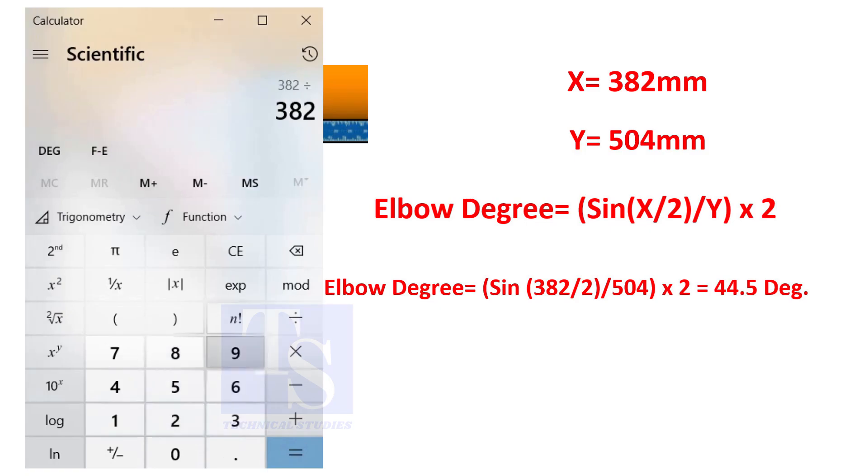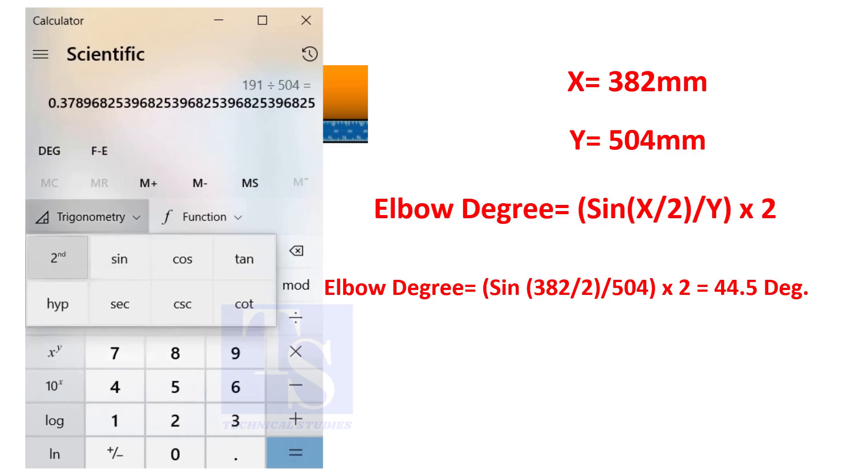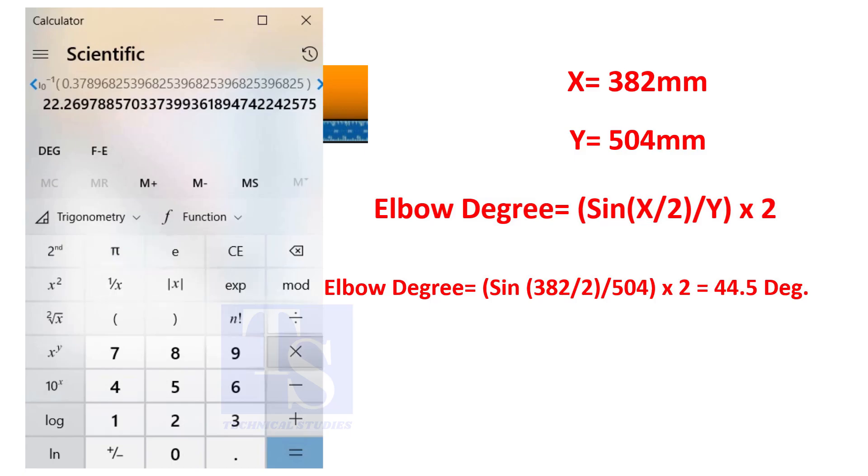You can try this method on pipe spools to measure the distortion due to welding. So, the degree of the elbow is 44.5 degrees.